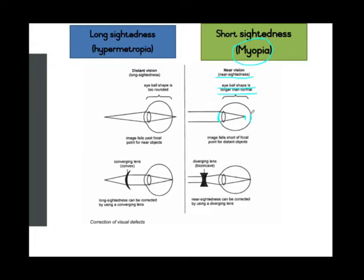So an image is forming in front of the retina instead of on the retina where it is supposed to form, and the person's distant vision is going to be very blurred. Myopia is a genetic disorder — meaning it can be hereditary; you may have gotten it from your parents or grandparents. But it can also be caused by the over-straining of the eye over a long period of time.